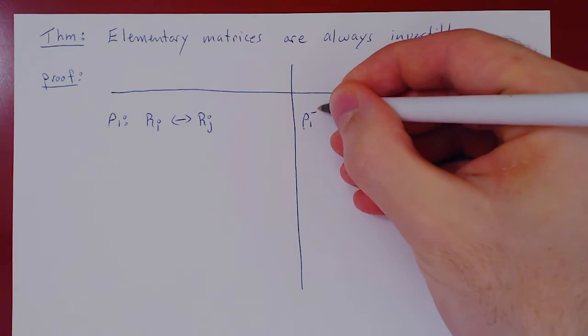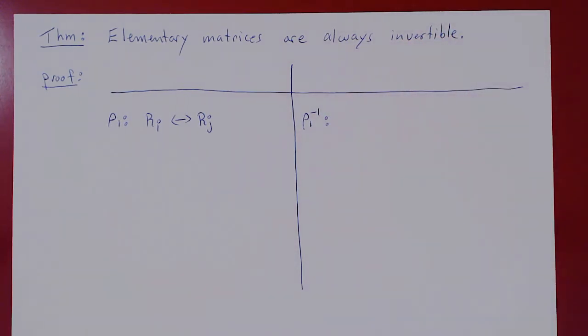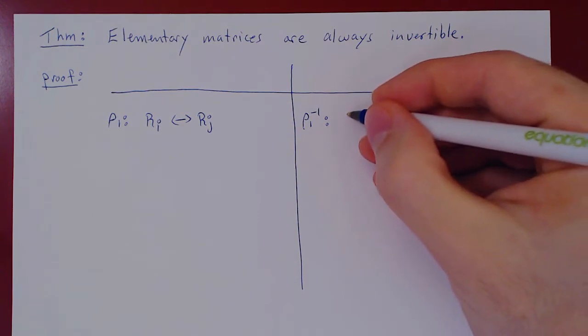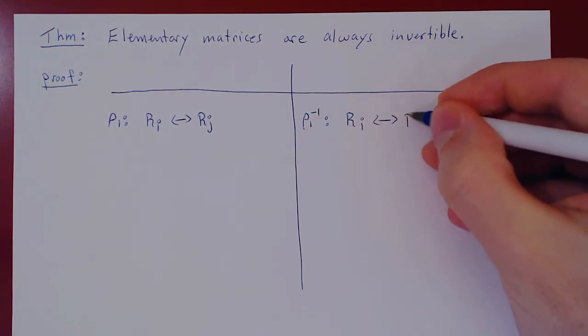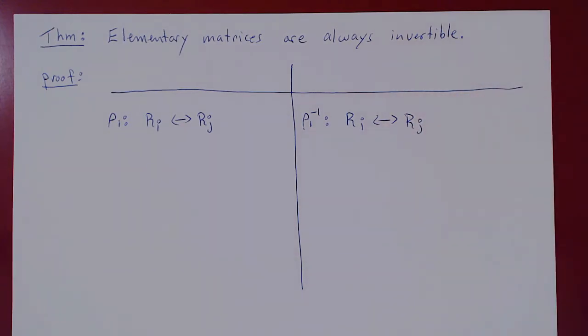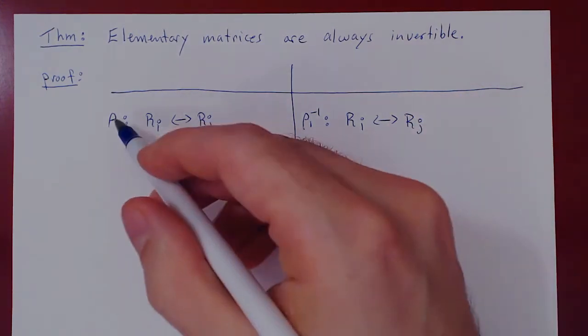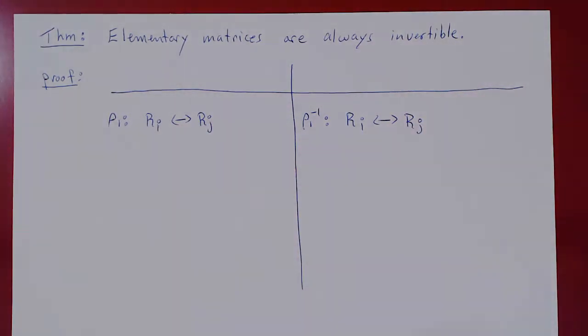Call this row 1 inverse. You took a matrix, you swapped two rows—how can you get back to the original matrix? Well, swap those two same rows again. So the inverse operation is the same. If you swap the two rows again, you're back to the original matrix. So you can always invert this type of row operation.